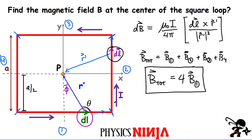Now this simplification would not be true if I wanted to calculate the field at a point that is not at the center, because in that case all the different segments are at different distances from that point and I would have to do the full calculation. But since I'm right at the center of a square, this symmetry simplification really helps us out.